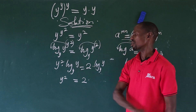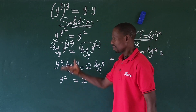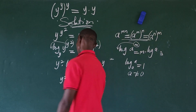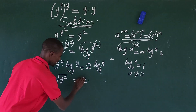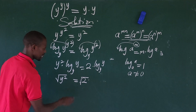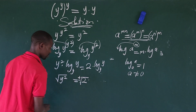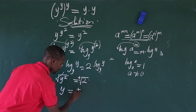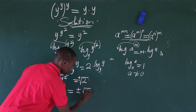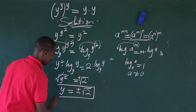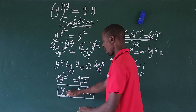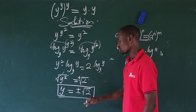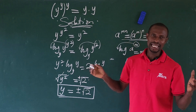This confirms what we said earlier by comparing bases — y squared equals 2. This is another method of arriving at the same result. Now we are looking for y, so we take the square root of both sides, introducing the plus-minus. Therefore y equals ±√2.